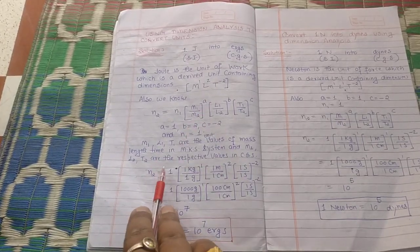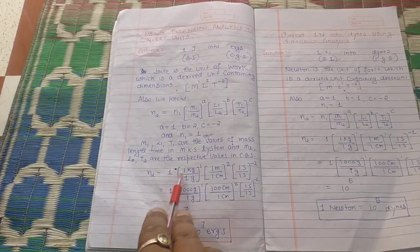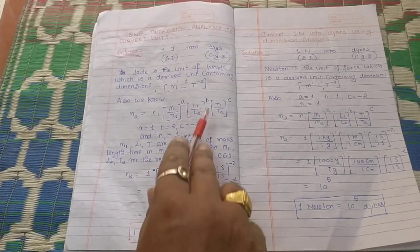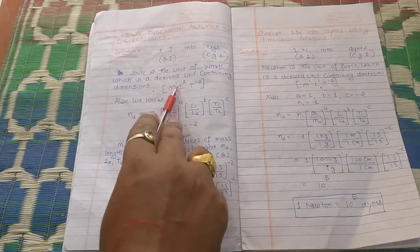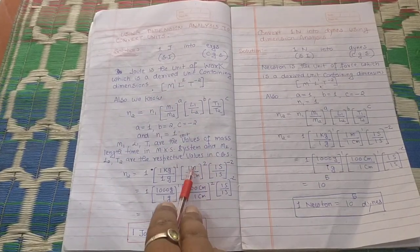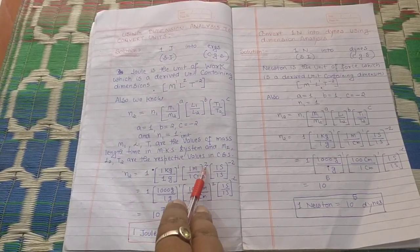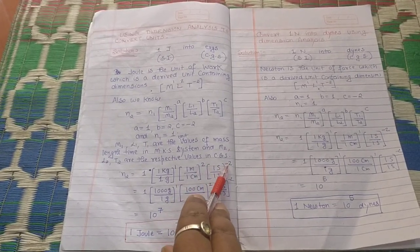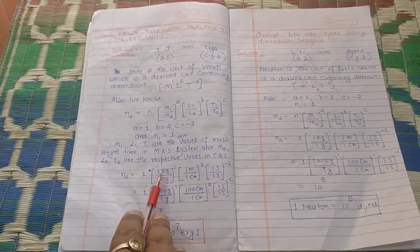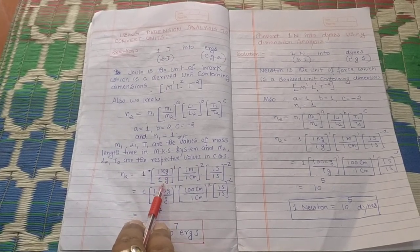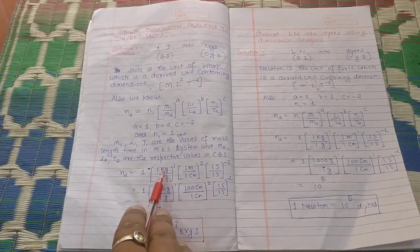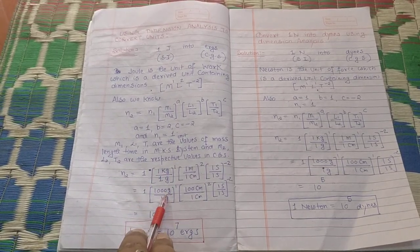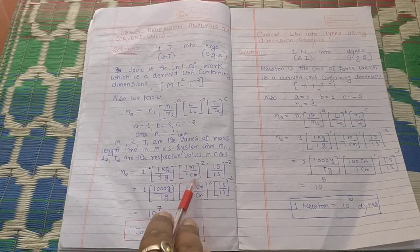N₂ = 1 × (1 kg / 1 gram)¹ × (1 meter / 1 centimeter)² × (1 second / 1 second)⁻². The power 1 comes from the dimension M² to power 1. Now the numerator is in kg and denominator is in grams, so convert kg into grams: 1 kg = 1000 grams. Similarly, 1 meter = 100 centimeters.